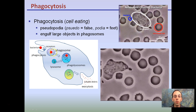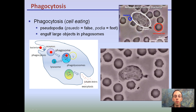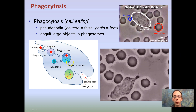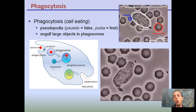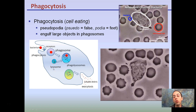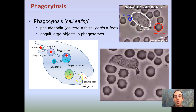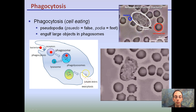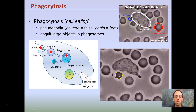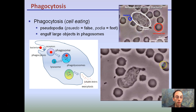The neutrophil would bind to and engulf the bacteria, then use lysosomes — which contain digestive enzymes — to help break it down into soluble debris that's not going to harm the cell.